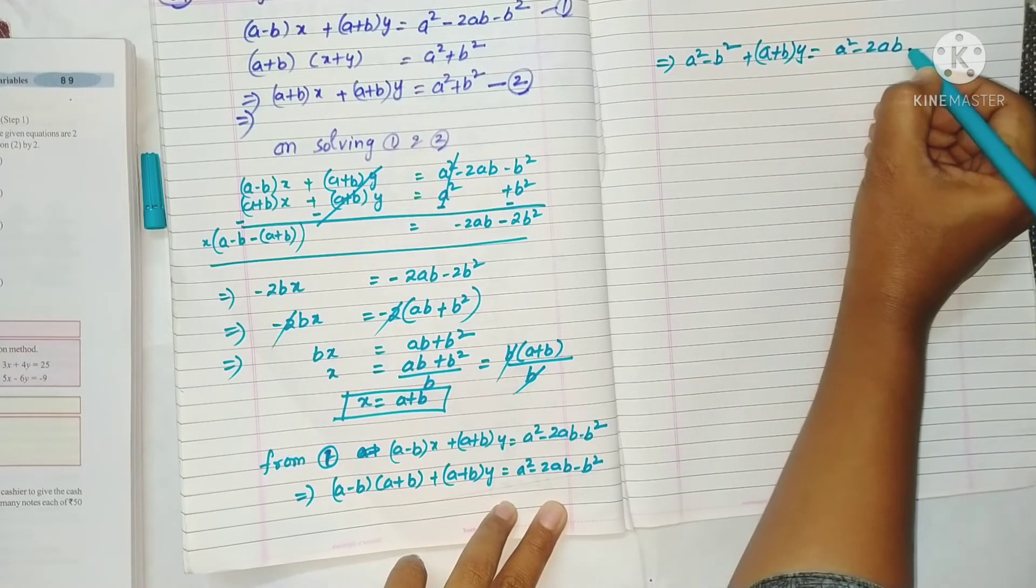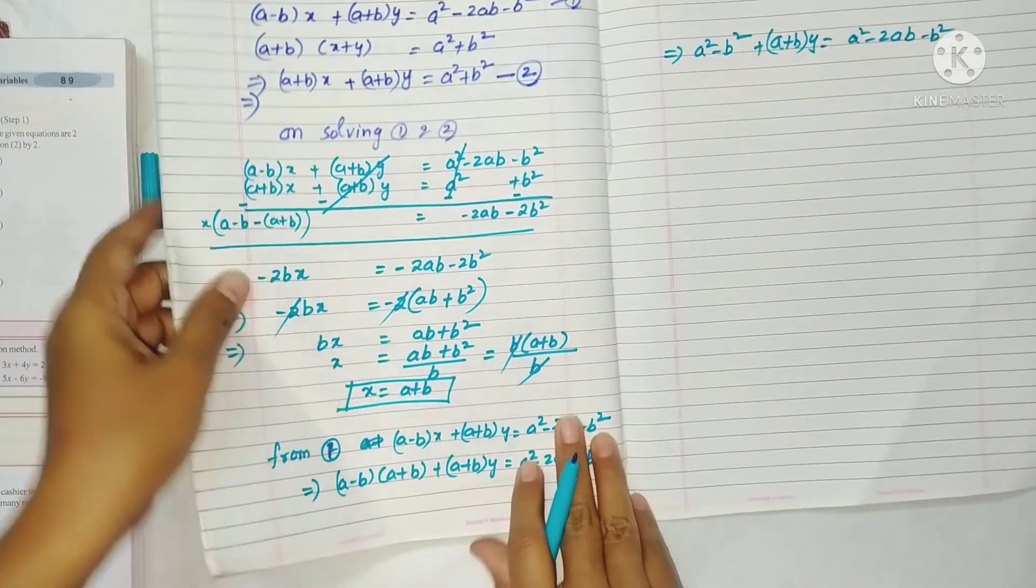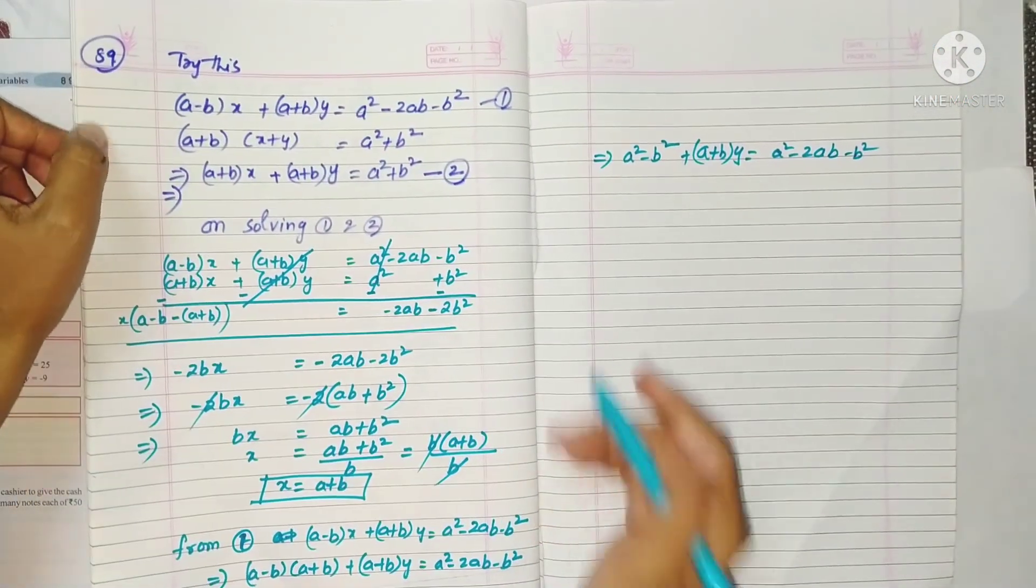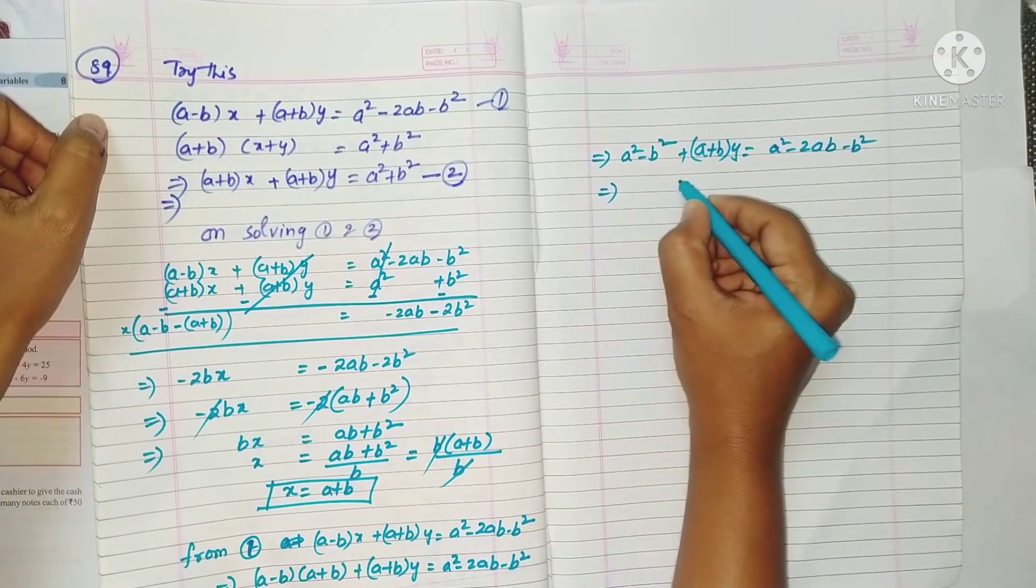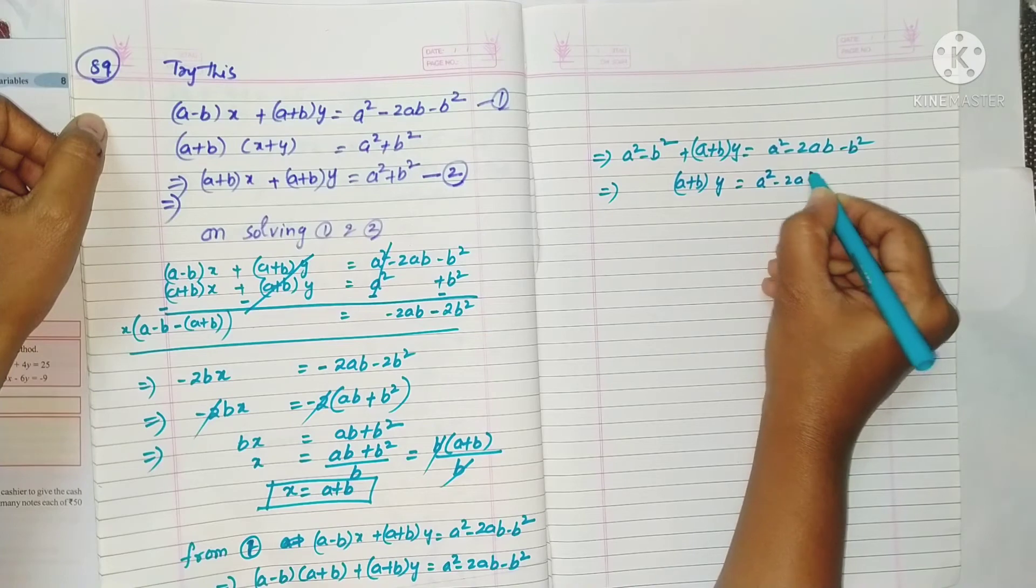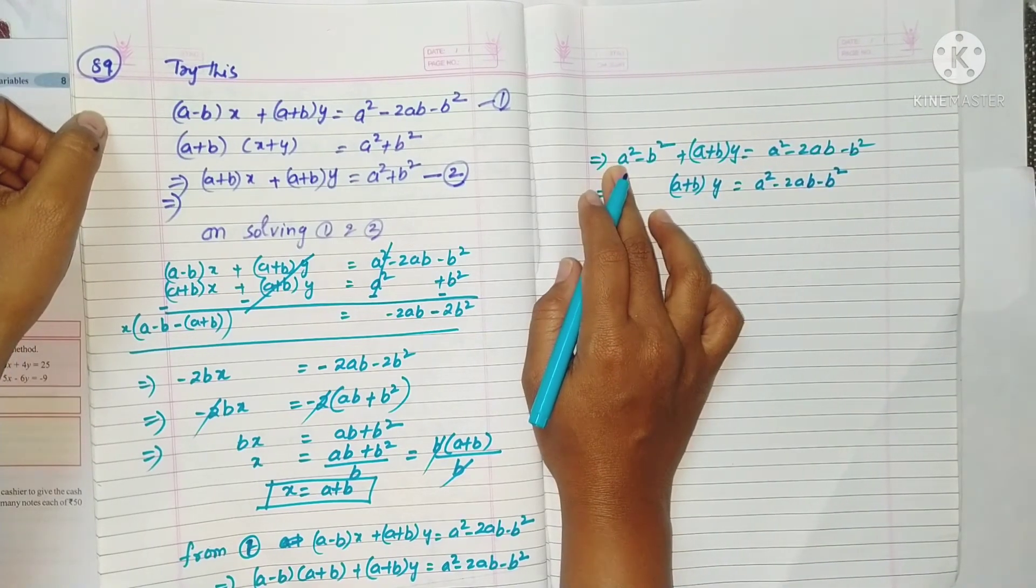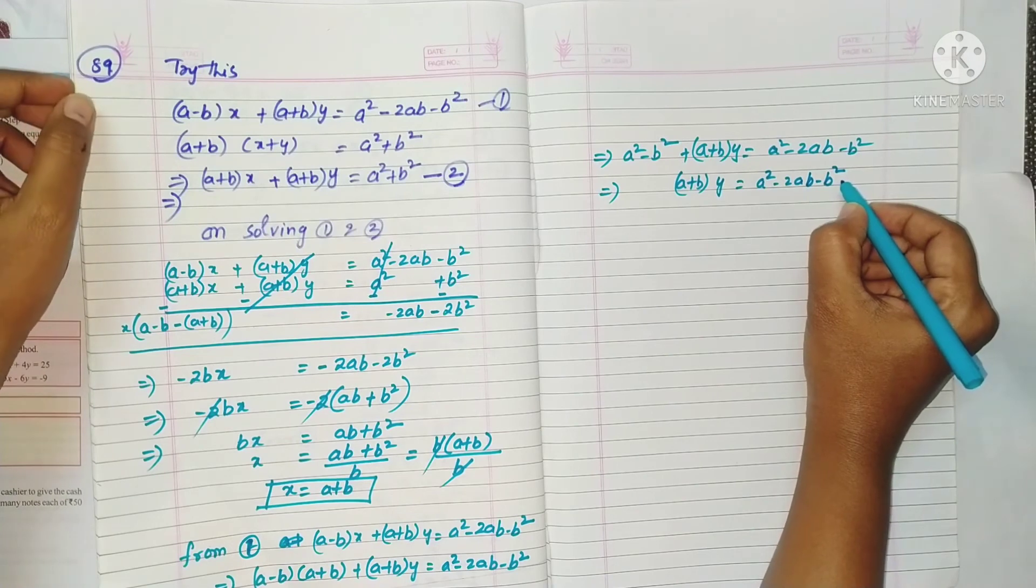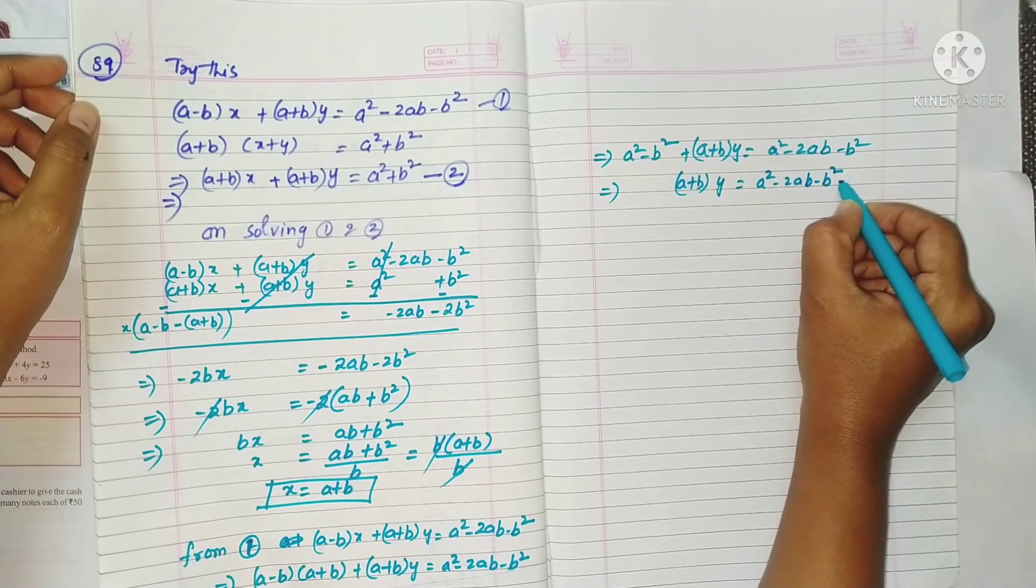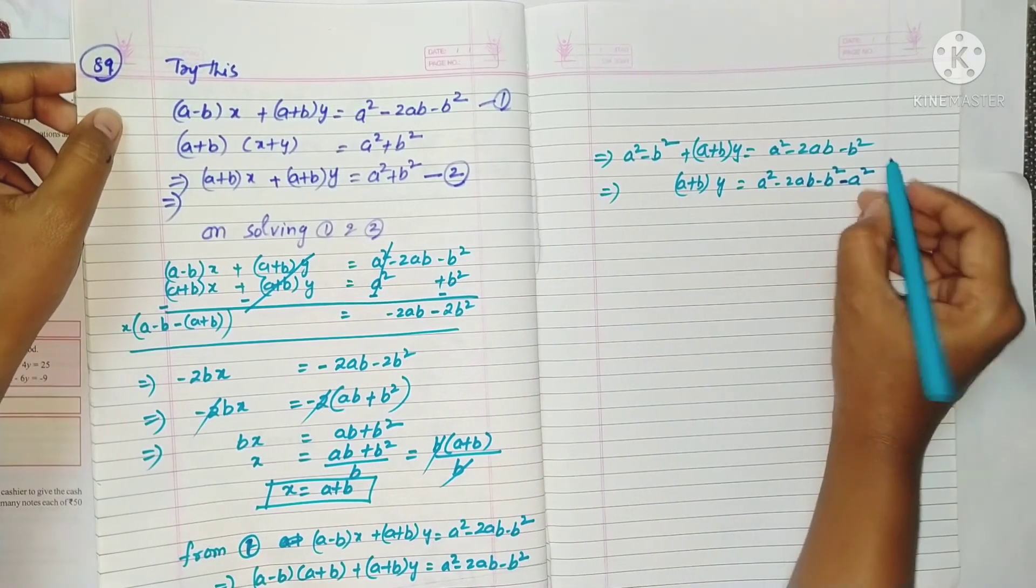Now (a+b)y is equal to a² minus 2ab minus b². If you transpose this plus a², it will be minus a². If you transpose this minus b², it is plus b².